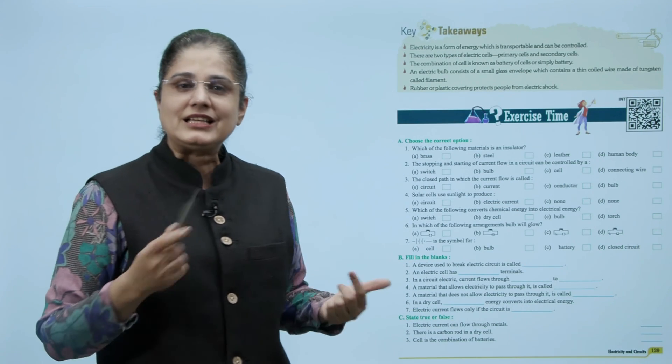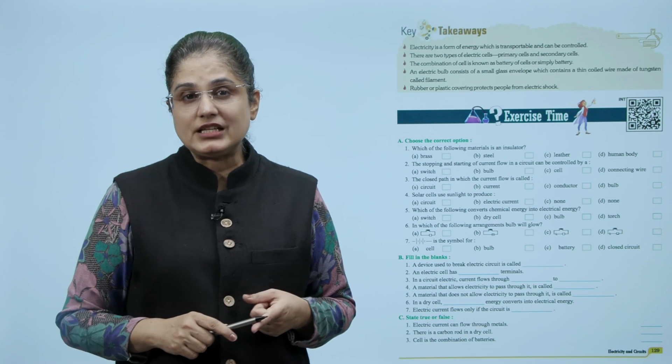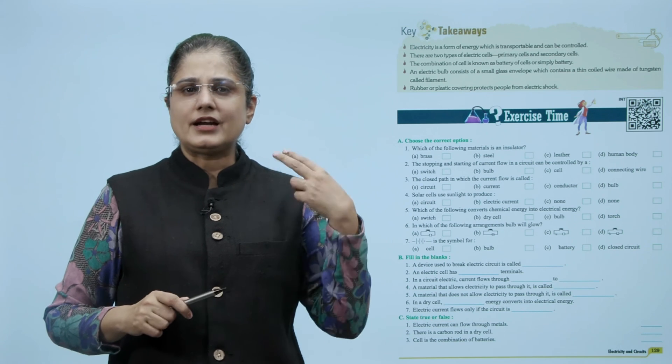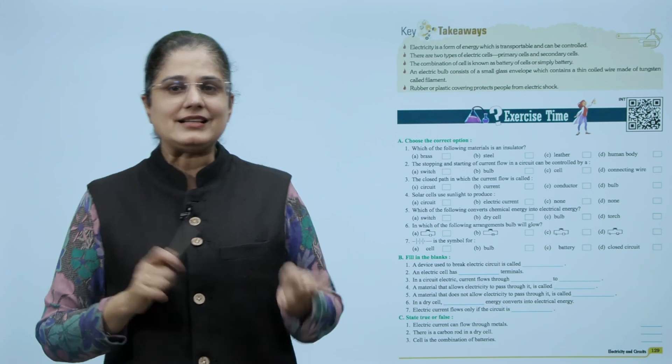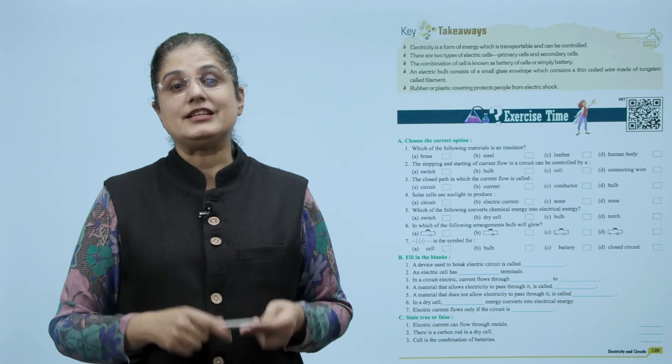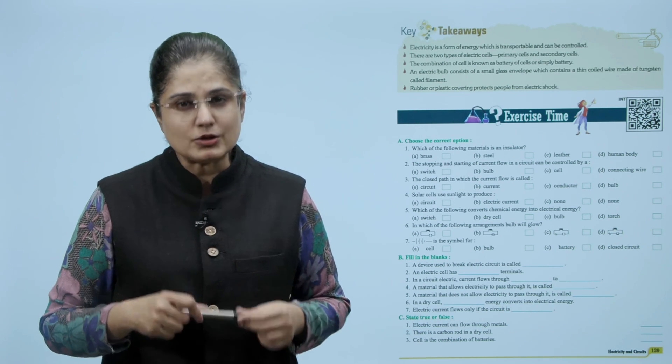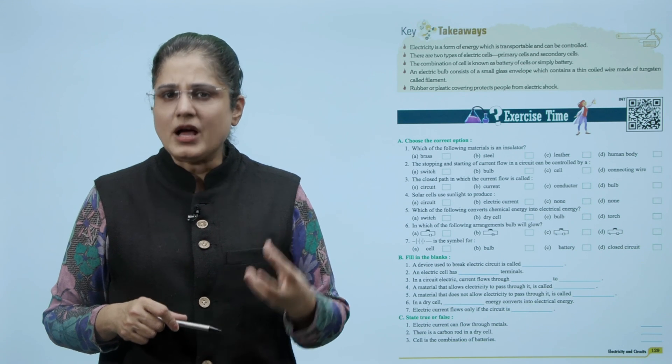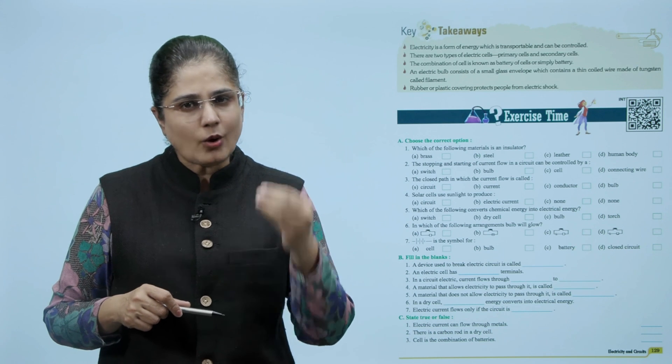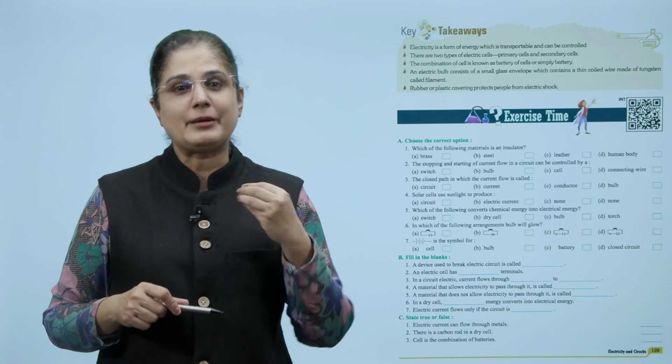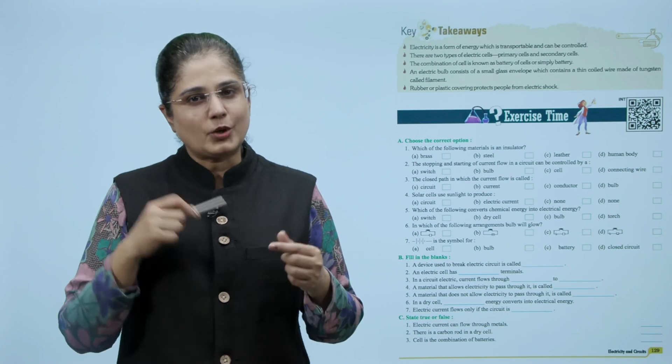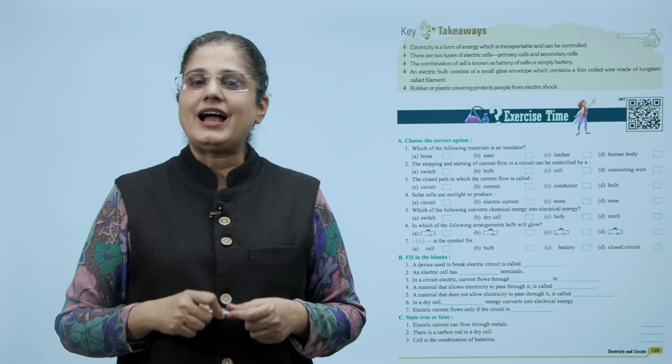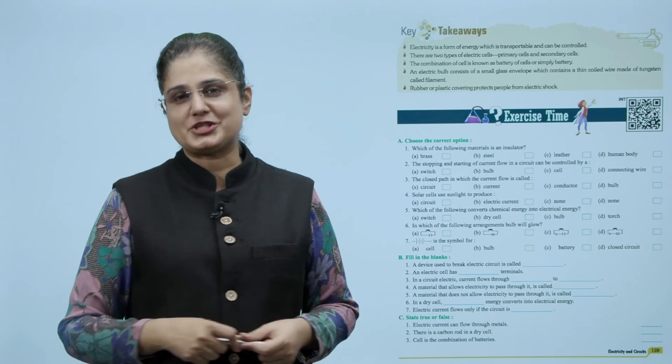So let us look at the key takeaways from this chapter. Electricity is a form of energy which is transportable and can be controlled. There are two types of electric cells: primary cells and secondary cells. The combination of cells is shown as battery of cells or simply battery. An electric bulb consists of a small glass envelope which contains a thin coiled wire made of tungsten called filament. Rubber or plastic covering protects people from electric shock. So I hope this chapter is clear and it will be easy to answer questions based on this chapter.